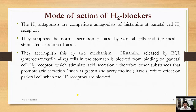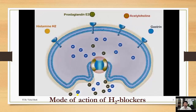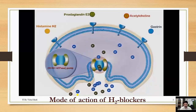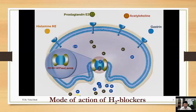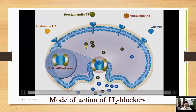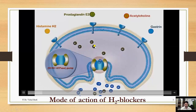First, histamine released by enterochromaffin-like cells in the stomach is blocked from binding on parietal cell H2 receptors, which stimulates acid secretion. Therefore, other substances that promote acid secretion such as gastrin and acetylcholine have reduced effect on parietal cells when the H2 receptors are blocked. Generally, the H+/K+ ATPase pump is involved in the synthesis of gastric juice.